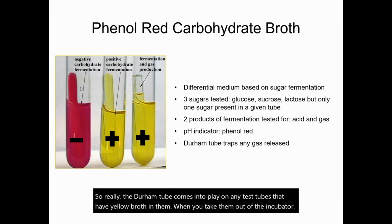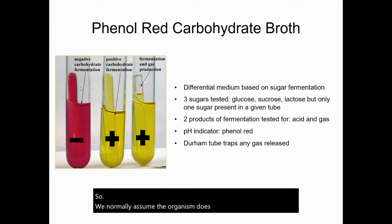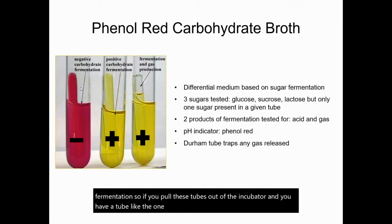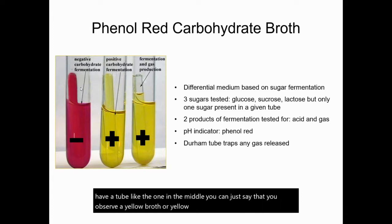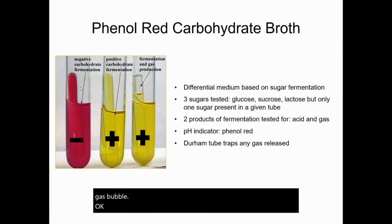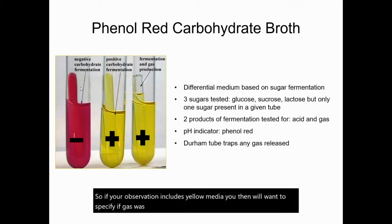The Durham tube really comes into play on any test tubes that have yellow broth in them when you take them out of the incubator. We typically assume that the organism does not release gas during fermentation. So if you pull these tubes out of the incubator and you have a tube like the one in the middle, you can just say that you observe a yellow broth or yellow media. However, if your tube looks like the right-hand tube, you would want to specify that you see a gas bubble in your observations — so you would say yellow broth with a gas bubble. If your observation includes yellow media, you then will want to specify if gas was produced if there's a gas bubble in the Durham tube.